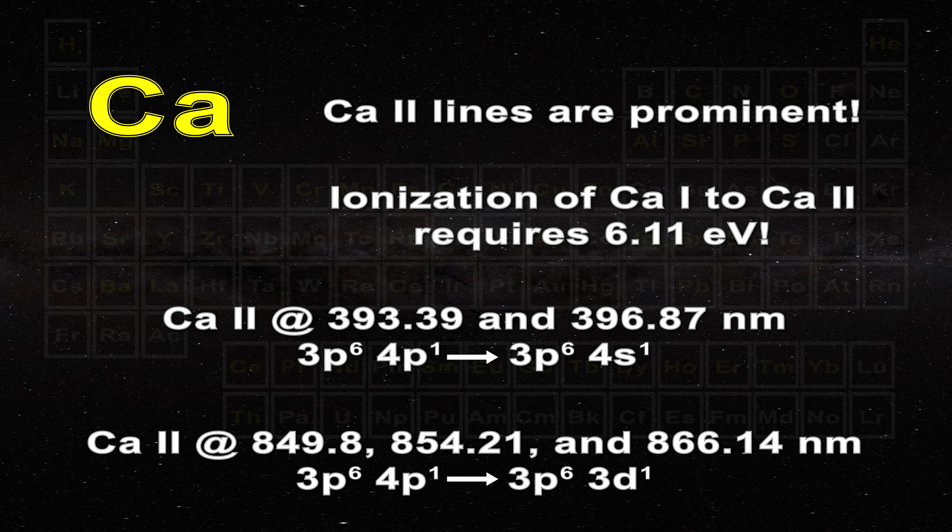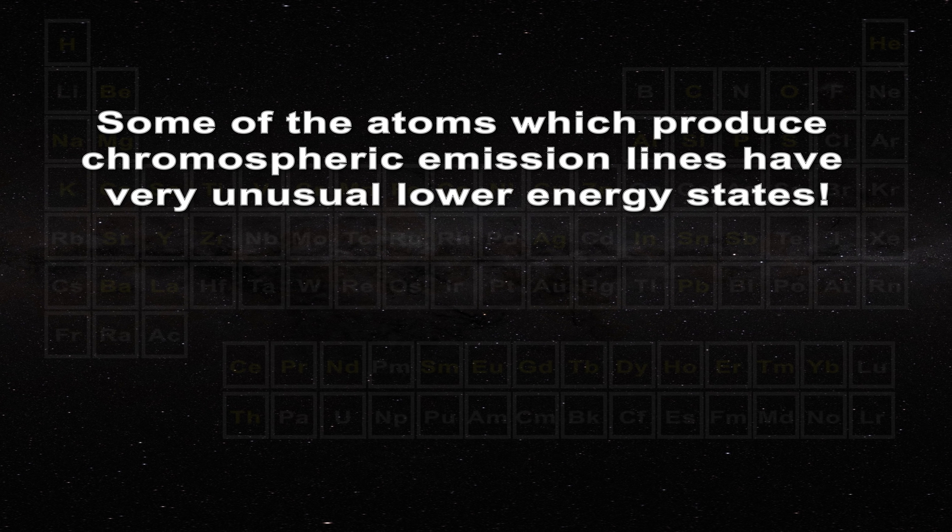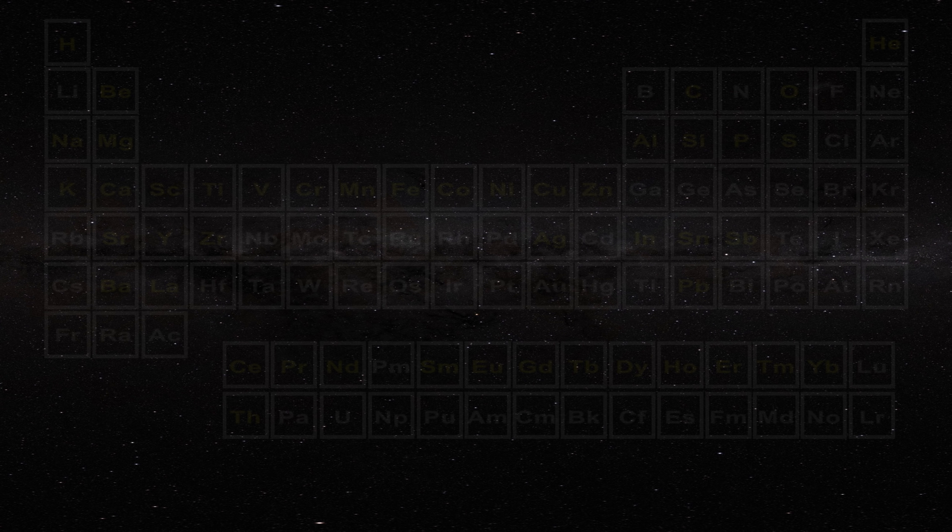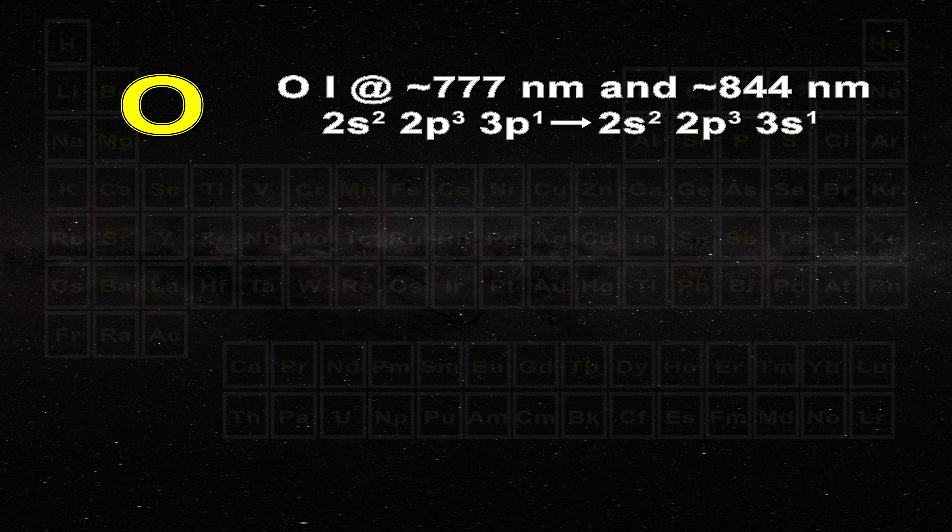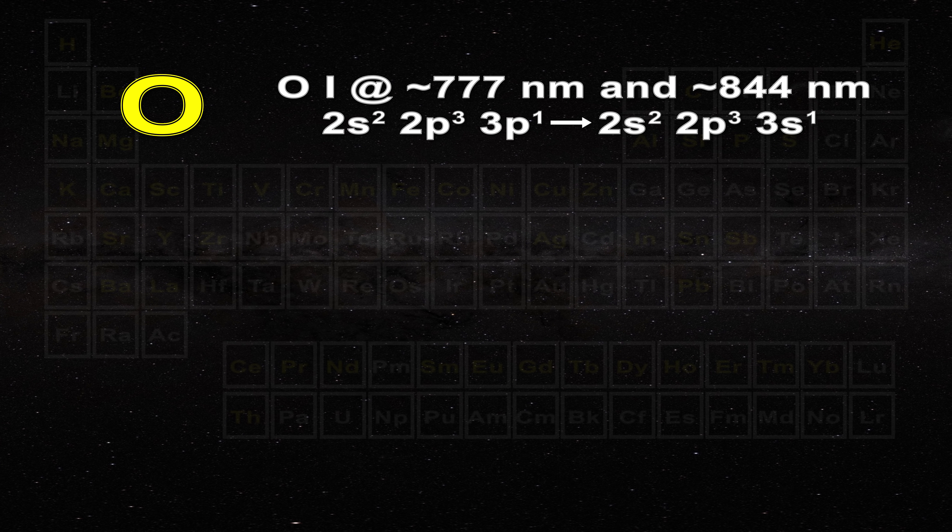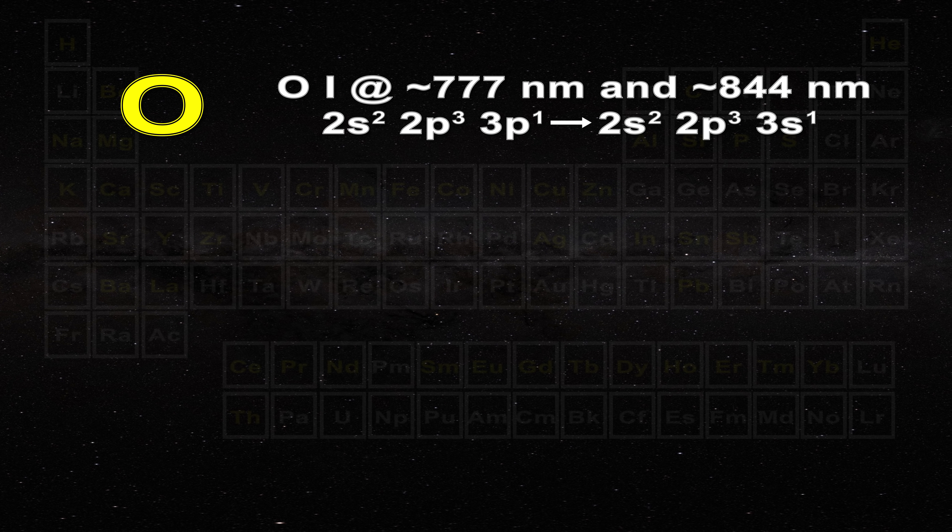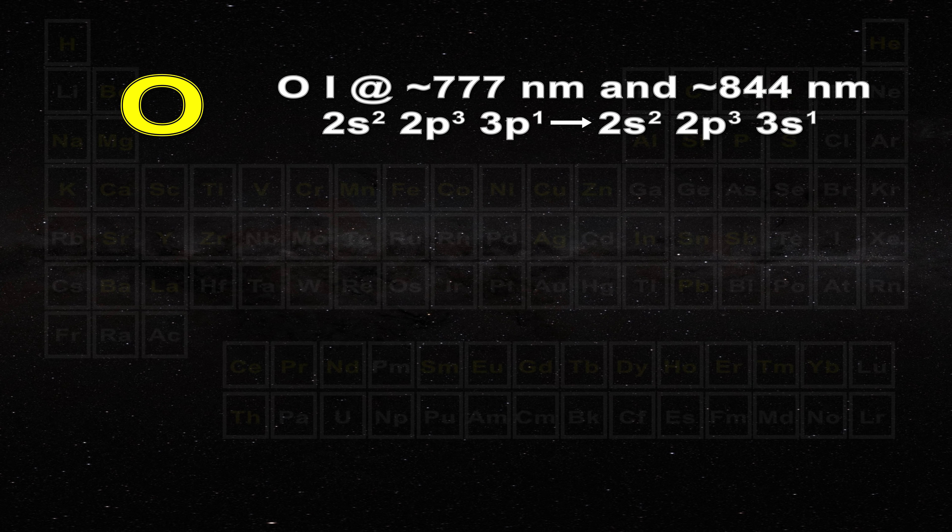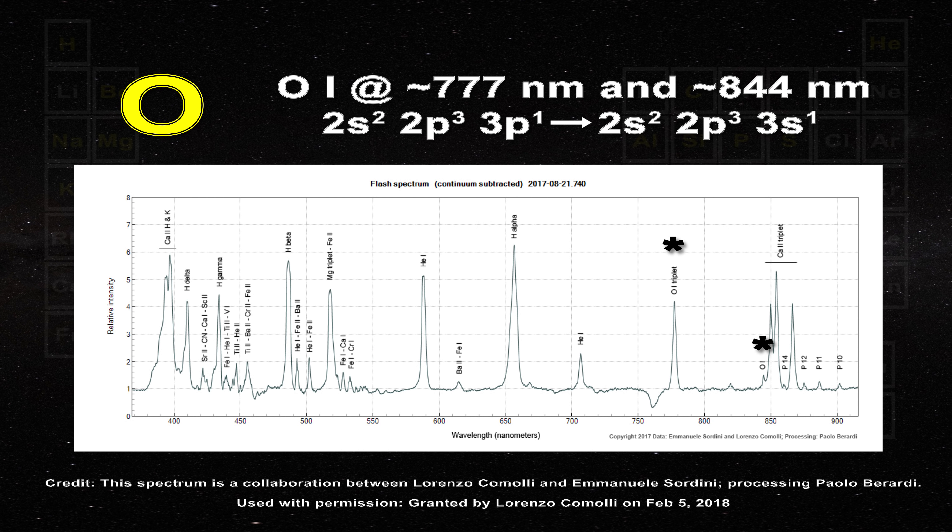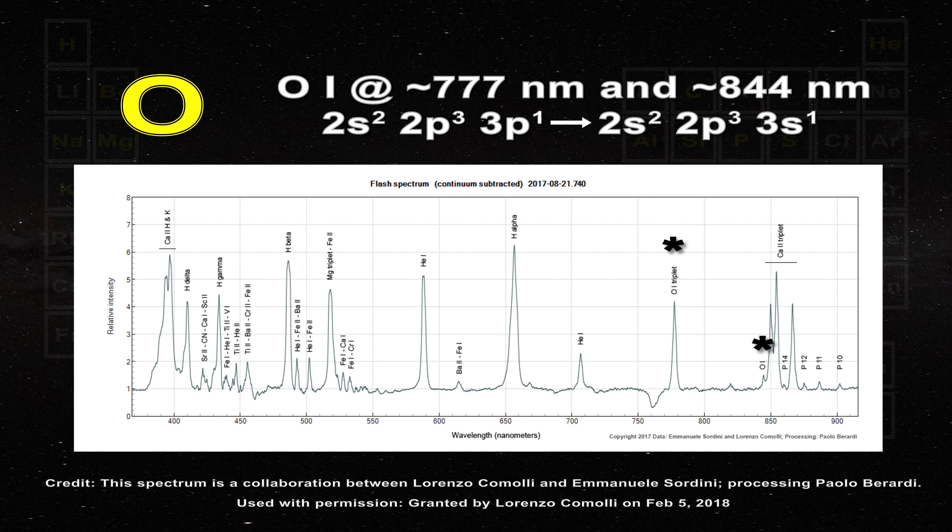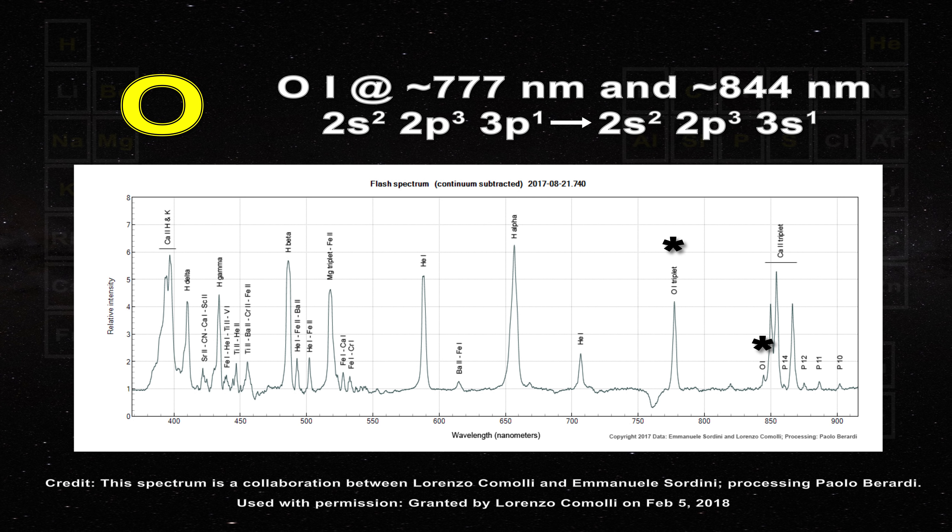Several of the other atoms which produce chromospheric emission lines adopt unusual lower energy level states relative to their known ground state. The singlet lines of oxygen are an example. They involve a transition from the 2s2 2p3 3p state to the 2s2 2p3 3s state. These occur as multiplets around 777 and 844 nanometers as you can see in this spectrum. Note how this transition is not to the ground state of the atom which would be 2s2 2p4. The electrons are going from 3p to 3s not to 2p4.